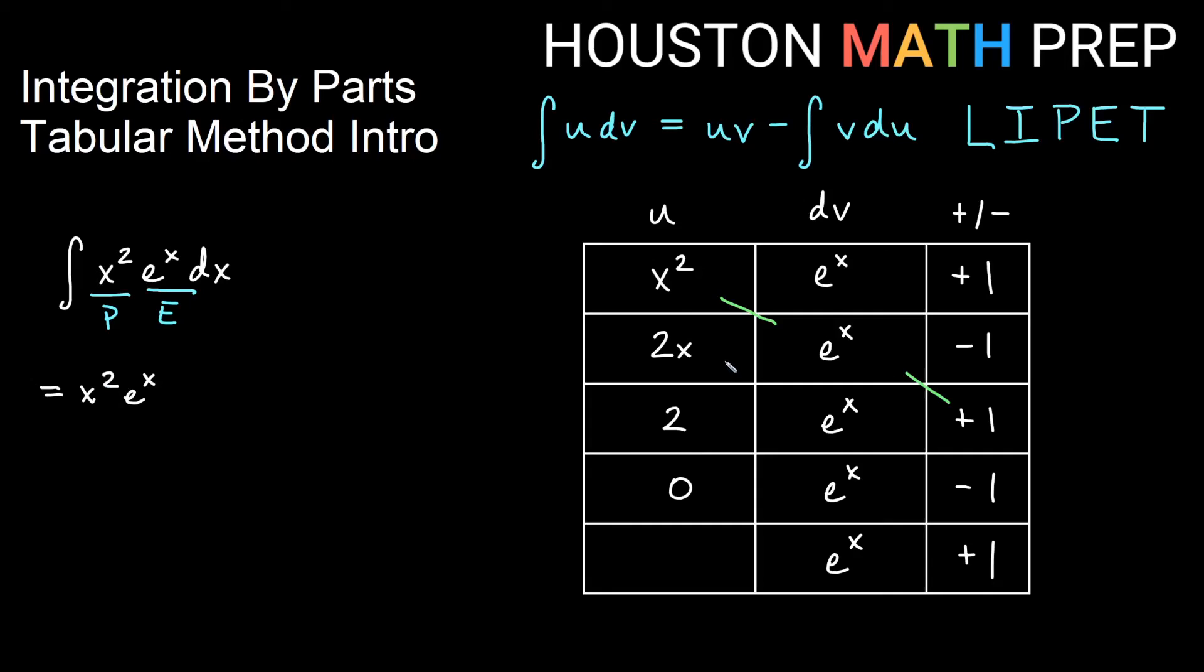The next term is going to be starting in the next box in the u column, 2x times diagonally down to the right. So that would give me negative 2x e to the x, so minus 2x e to the x. And if I go down one more term...